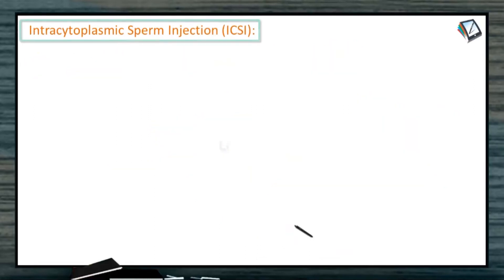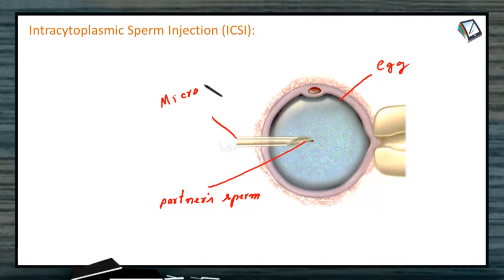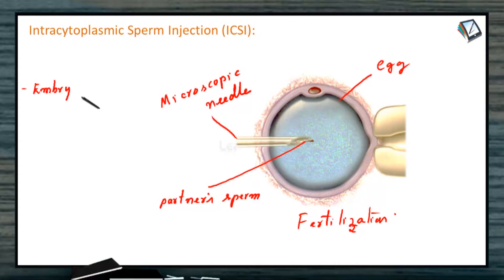The next technique is intracytoplasmic sperm injection, or ICSI. In this case, one of the partner's sperms is placed directly inside the egg with the help of a micro-needle, rather than many sperms being positioned close to the outside of the egg as in IVF. Once fertilization is over, the resultant embryo is placed inside the uterus for further development. Generally, this method is used when the male partner has a low sperm count.